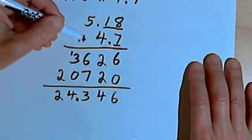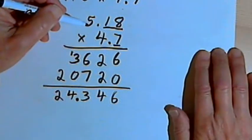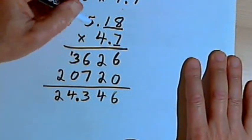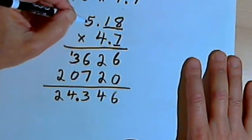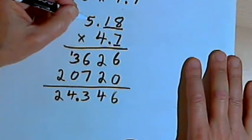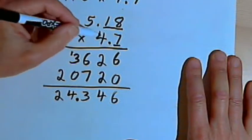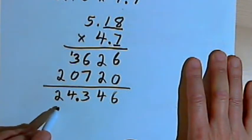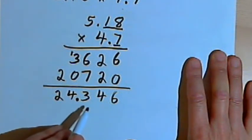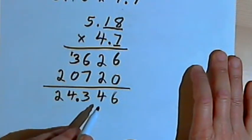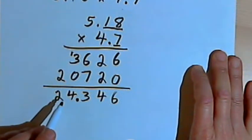And as a reality check, we can look at the two numbers I was multiplying. I could take 5.18 and round that to 5. I could take 4.7 and round that up to 5. And 5 times 5 is 25. And the answer I got, 24.346, is very close to 25. So the answer makes sense.